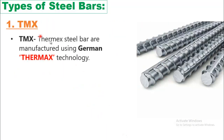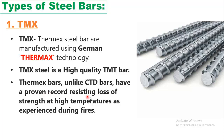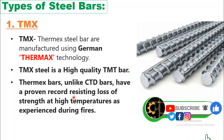The first type is TMX. TMX bars are thermic steel bars manufactured using German Thermics technology — the name TMX comes from this technology. TMX is a high-quality TMT bar. Unlike CTD bars, TMX bars have a proven record of resisting loss of strength at high temperatures, as experienced during fires. Therefore, TMX bars should be used in constructions vulnerable to heat, such as glass or steel manufacturing industries where temperatures are very high.